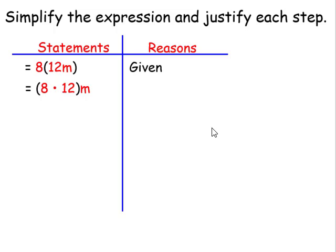Remember, parentheses means multiplication. So when I'm reading this, this is 8 times 12m or 8 times 12 times m. Now I have 8 times 12m. I achieve this by using the associative property of multiplication.